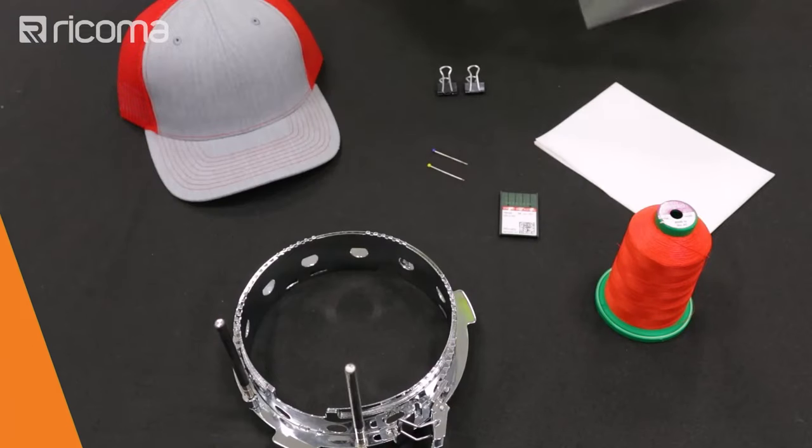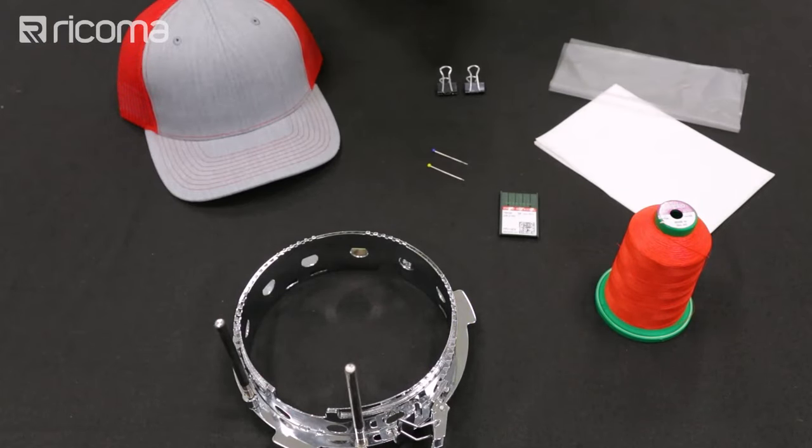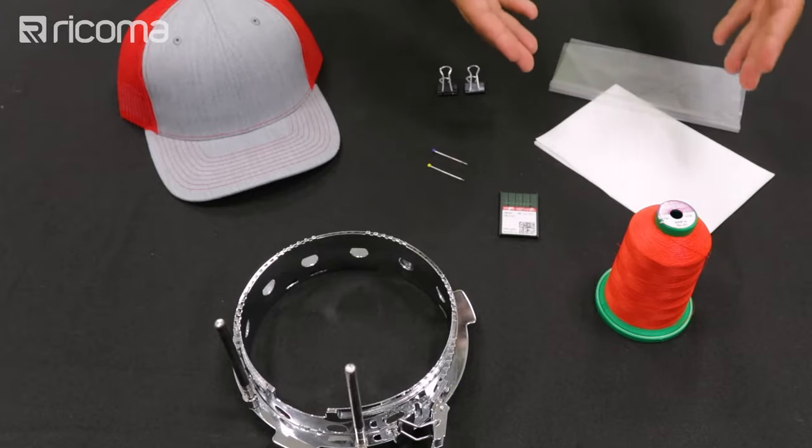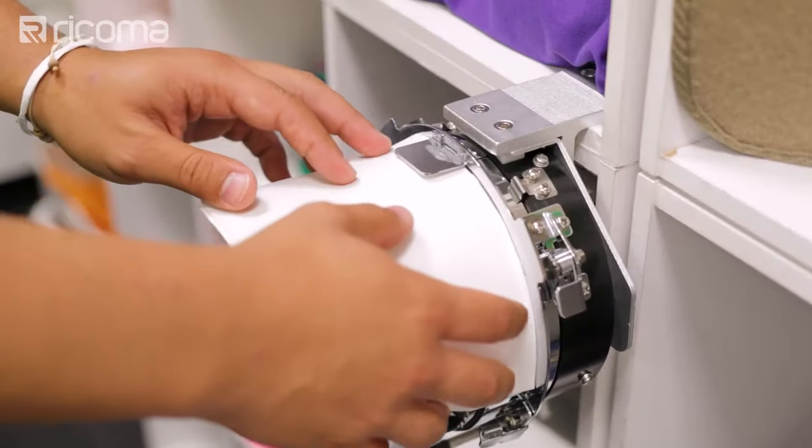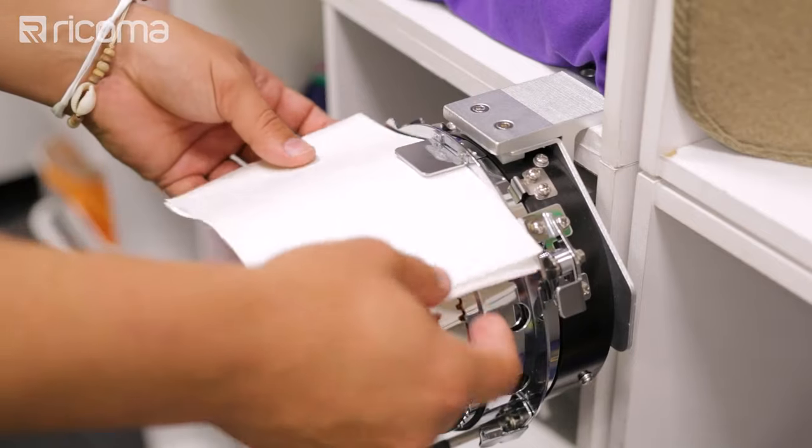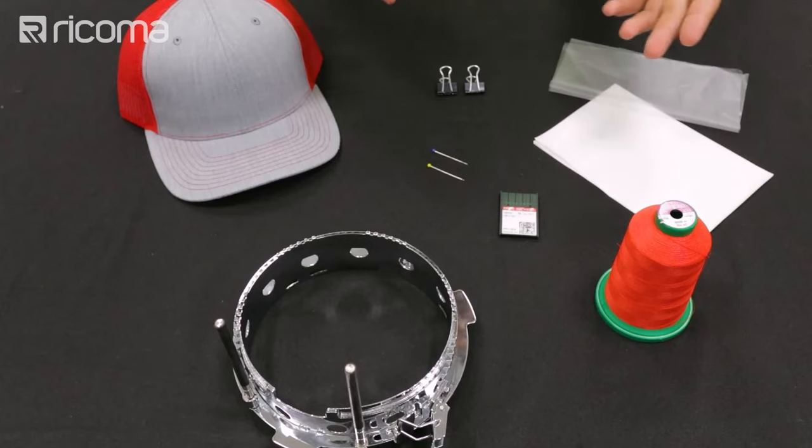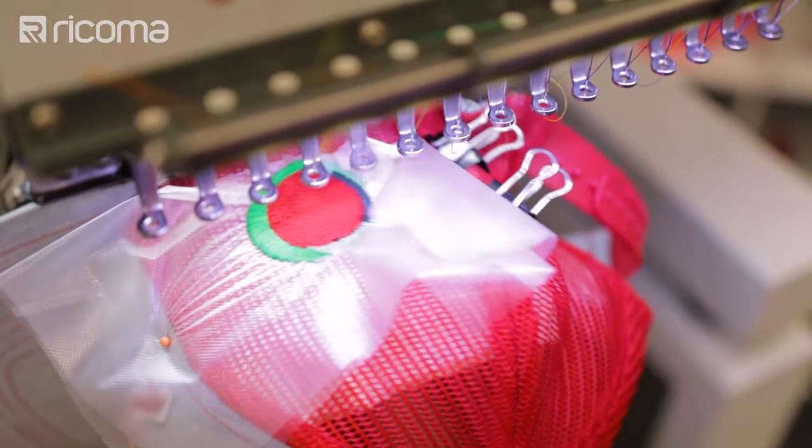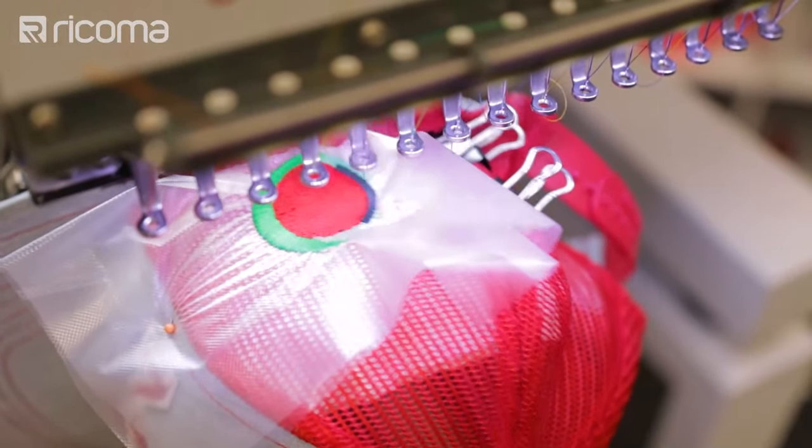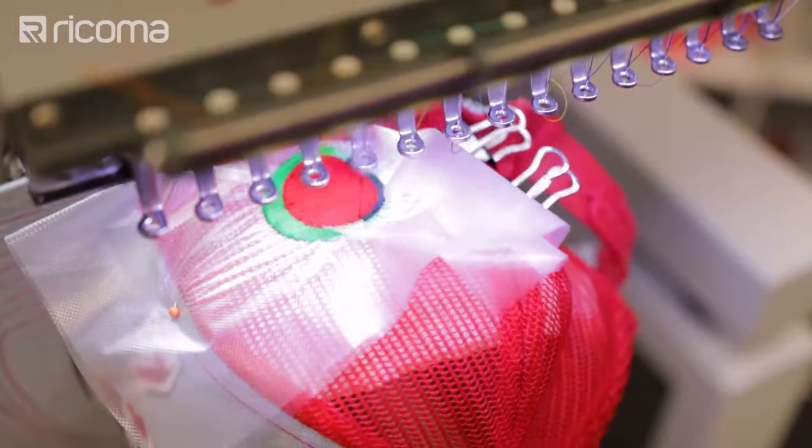Okay guys, let's go ahead and jump into the materials we're going to be needing for this project. The first thing we have is our stabilizer and our topping. I'm going to be using three sheets of Tearaway Stabilizer because it's easier for me to rip off afterwards. You can also use a thick cutaway if you'd like to. Now I'm going to be using this topping for the front part of the mesh side. What this is going to do is make sure that your threads stay on top of your mesh instead of sinking in.